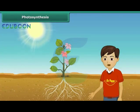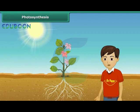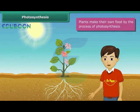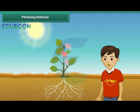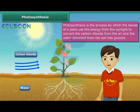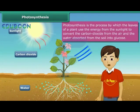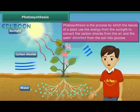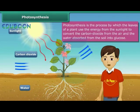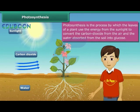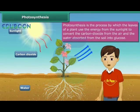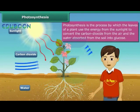Like animals and human beings, plants also require food for their survival. However, unlike animals and human beings, they can make their own food by the process of photosynthesis. This process takes place in the leaves of the plant. In this process, the leaves use the energy from the sunlight to convert the carbon dioxide absorbed from the air and the water absorbed from the soil into glucose. The food prepared by the leaves is then transported to the different parts of the plant.